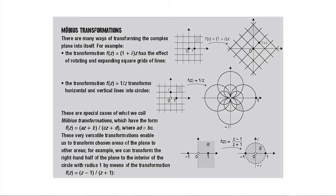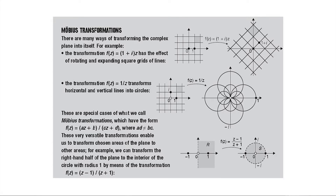These Möbius transformations are what's called conformal: if two curves in the originating plane are at right angles, their images in the transformed plane are also at right angles. Another lovely transformation maps the whole right half-plane to the inside of a circle. These transformations are very versatile, very important, and also very pretty.